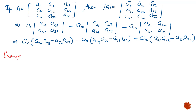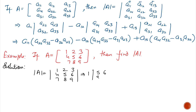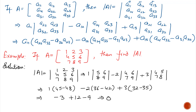Example: If A is a 3 by 3 matrix [1, 2, 3, 4, 5, 6, 7, 8, 9], find the determinant of A. To calculate, write the matrix in determinant form and expand: 1·(5·9 − 6·8) − 2·(4·9 − 6·7) + 3·(4·8 − 5·7). After calculation we get −3 + 12 − 9, which equals 0.